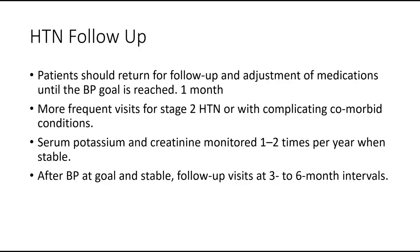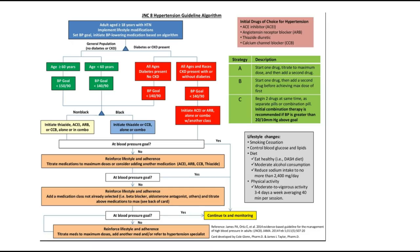For hypertension follow-up, patients should return monthly for medication adjustments until the BP goal is reached. They may need more frequent visits if they have stage 2 hypertension with complications or comorbidities. Serum creatinine and potassium need to be monitored one to two times per year. Once blood pressure is stable, you can follow up every three to six months.